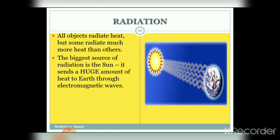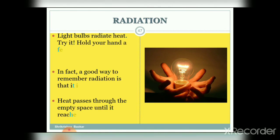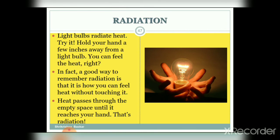All objects radiate heat, but some radiate much more than others. The biggest source of radiation is the sun, which sends a huge amount of heat to the Earth through electromagnetic waves. Light bulbs also radiate heat — hold your hand a few inches away from a light bulb and you can feel the heat. A good way to remember radiation is that it is how you can feel heat without touching it — heat passes through empty space until it reaches your hand.